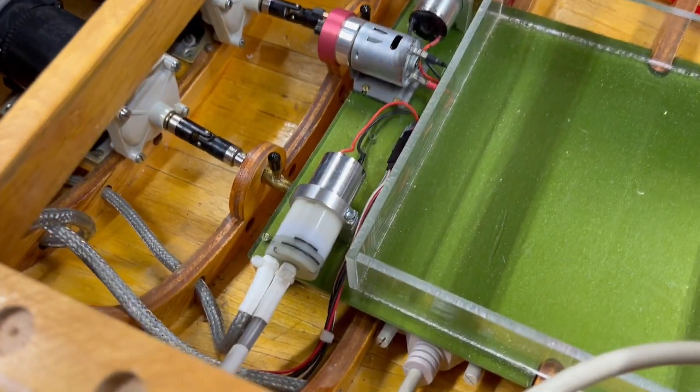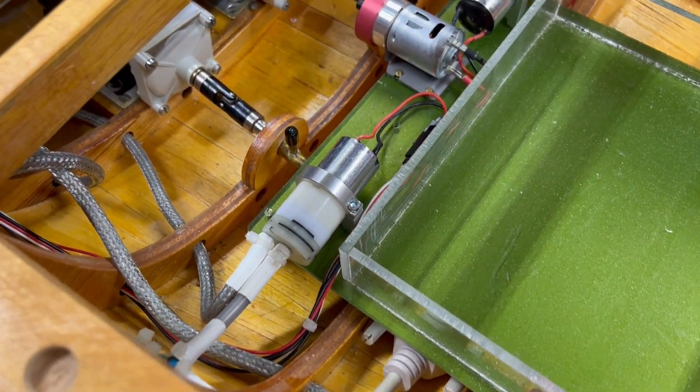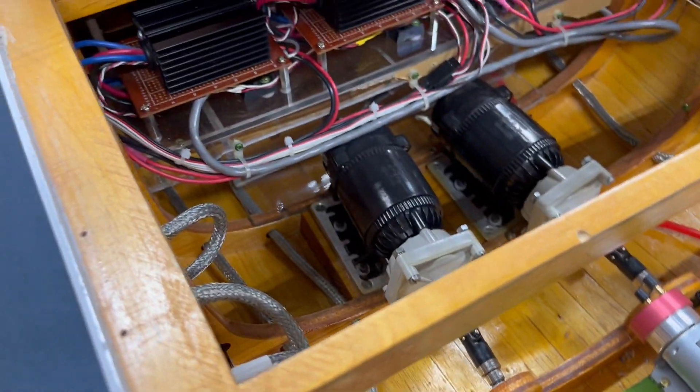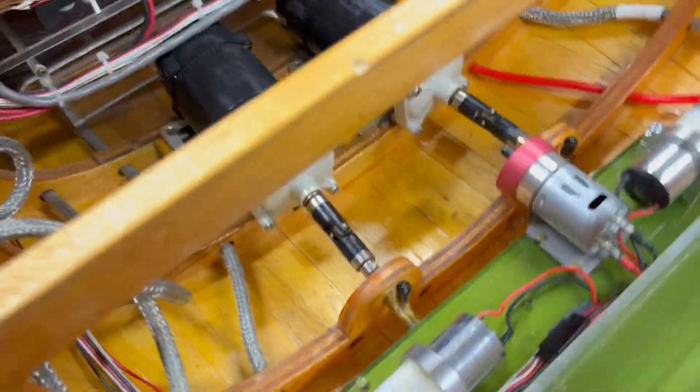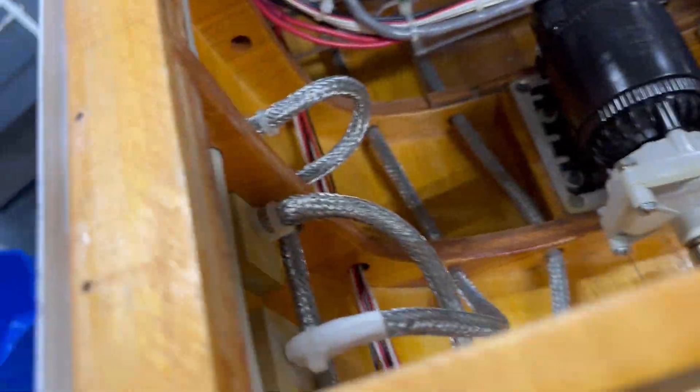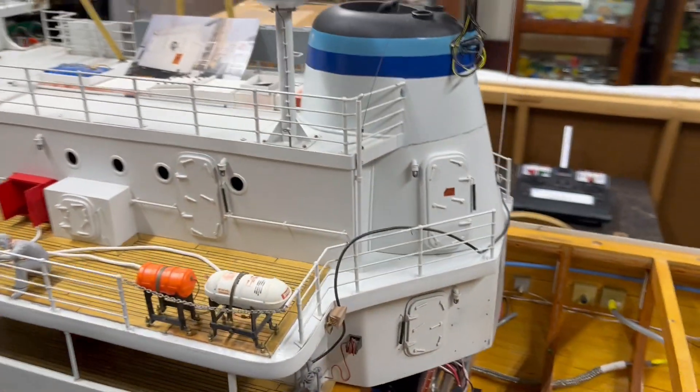The other pump I have is for the overboard discharge. It pumps up from the sea chest which is in the bottom of the model, pumps up through here and simply goes out of the overboard discharge there. So those are the two water pumps.